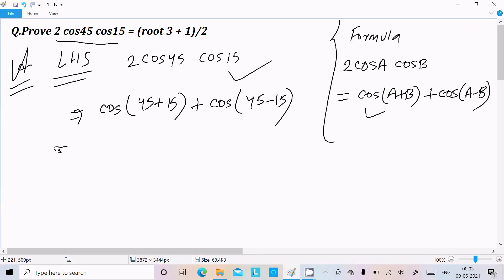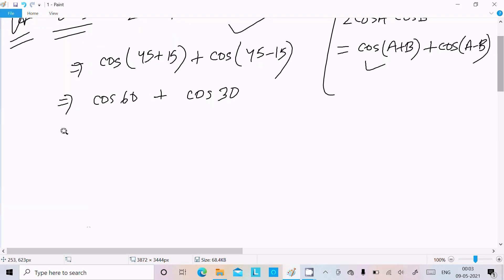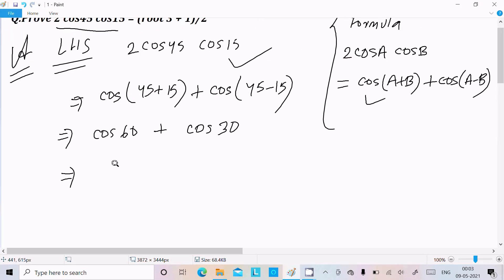Now, cos 45 plus 15, that is 60, plus cos 45 minus 15, that is 30. So here we need to know the value of cos 60, that is 1 by 2, and the value of cos 30, root 3 by 2.